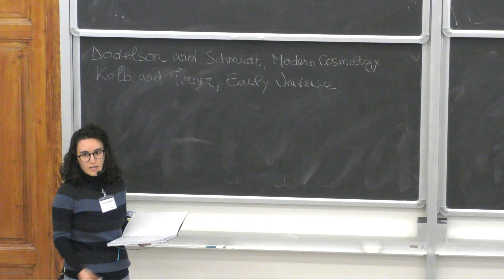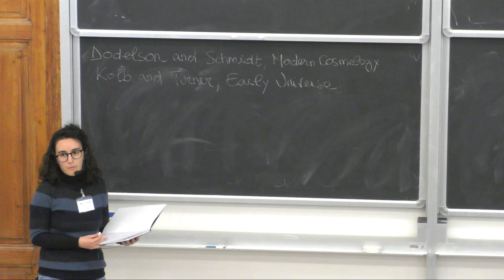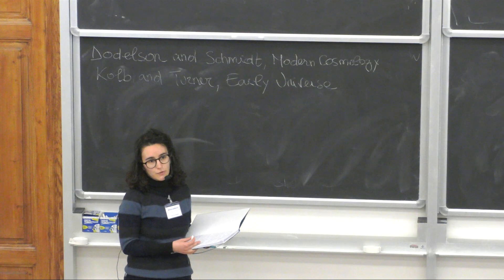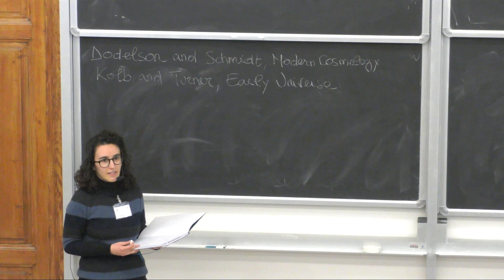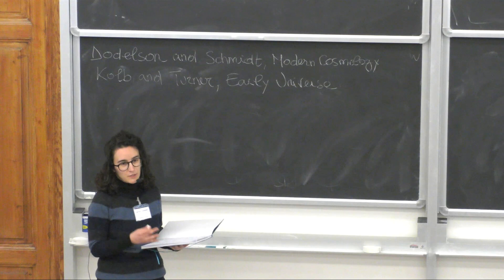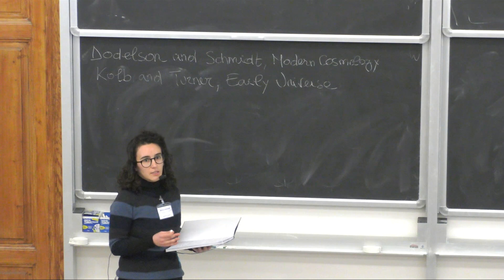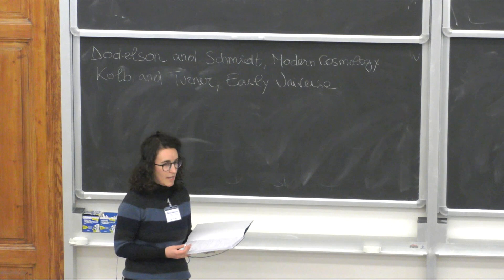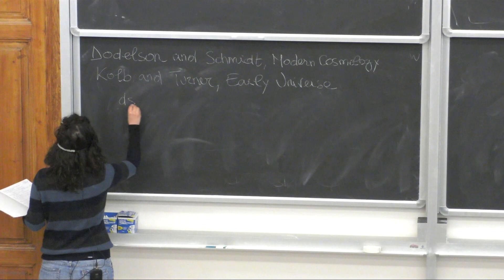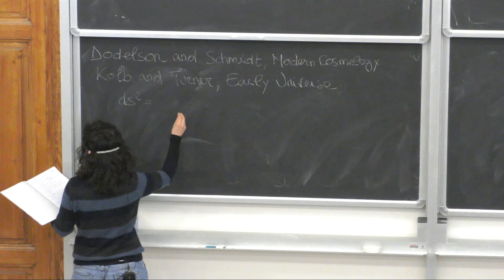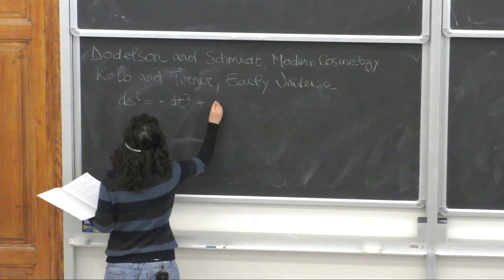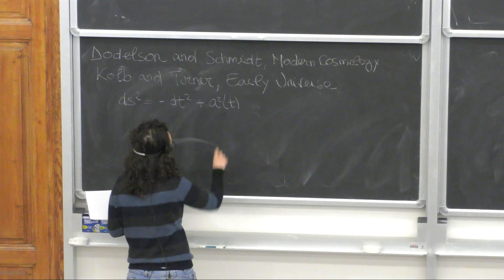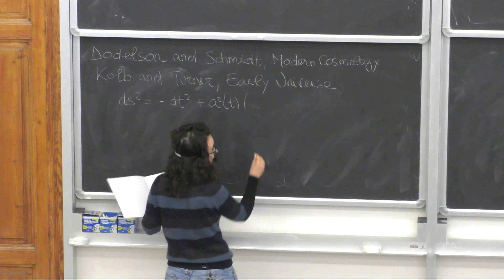Let's now start with the background cosmology. We know from observations that the universe can be considered homogeneous and isotropic at large scales, which means that if we observe at scales that are large enough, the observational features of the universe appear homogeneous and isotropic. This means that at zeroth order we can describe this background cosmology in terms of a homogeneous and isotropic space. The proper metric in this case is the Friedmann–Robertson–Walker metric, where the feature of homogeneous isotropic expansion is encoded in the scale factor, which is just a function of time.